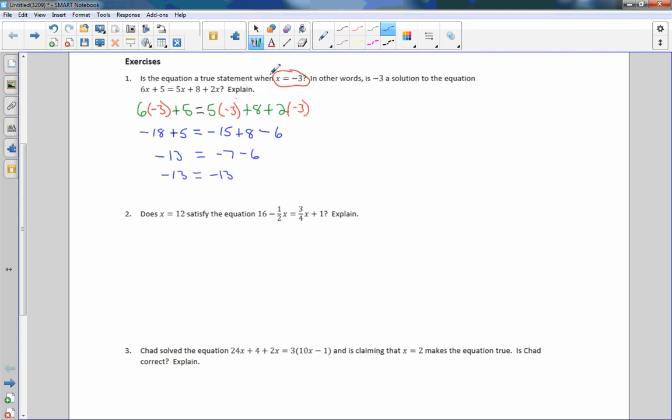Negative 15 plus 8 is negative 7 minus 6. And that would just say negative 13 equals negative 13. Is the equation a true statement when X equals negative 3? And the answer is yes. My form of explanation is showing my work. If I substituted those values in, the left is equal to the right. Therefore, it is true.